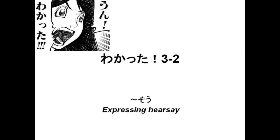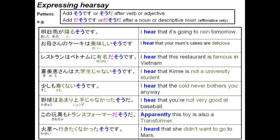3-2: expressing hearsay. The pattern here is to add so desu or soda after a verb or adjective, and then we add da so desu or soda after a noun or descriptive noun only in its affirmative tense. For example: I hear that it's going to rain tomorrow. I hear that this restaurant is famous in Vietnam.